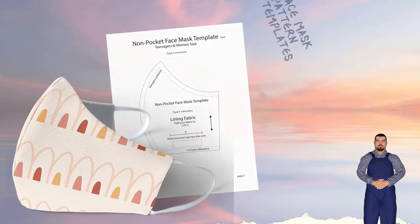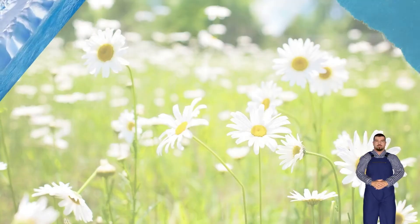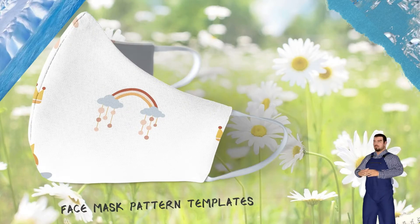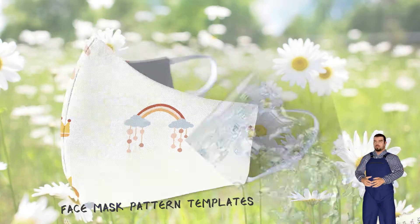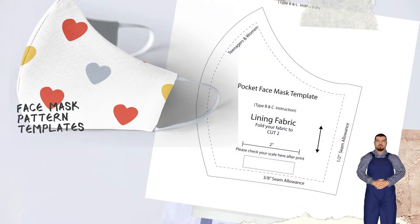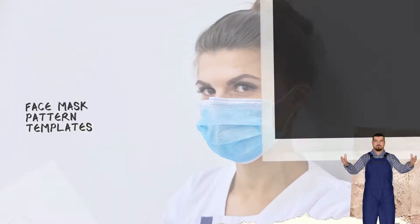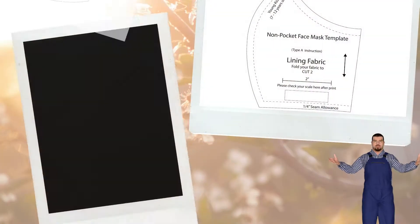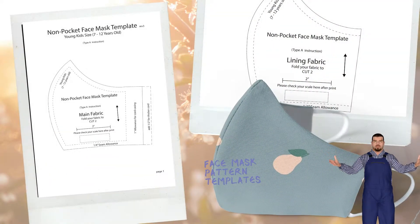1. Face Mask Sewing Pattern, without seam allowance included. Use on Type A, B, and C, all four sizes: men, women/teenagers, kids 7 to 12, kids 3 to 6.